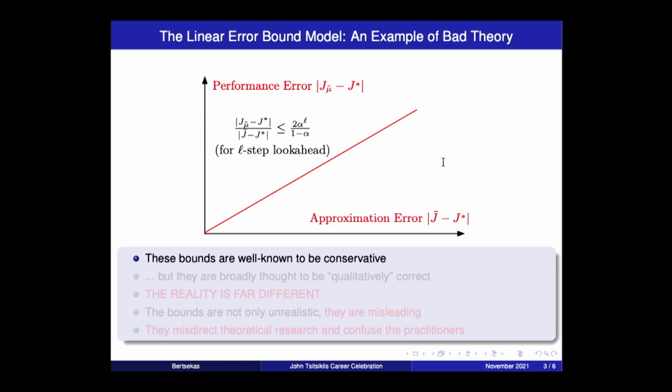Of course, we knew very well that these bounds are conservative. The real relationship lies much lower than this bound. However, we thought that, broadly speaking, they are qualitatively correct. Even though this bound is not exact, it gives you the general trend and some kind of a qualitatively correct result.